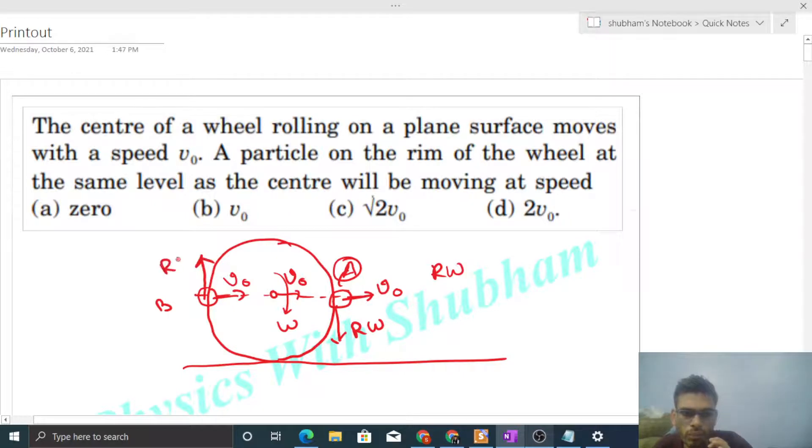So here it will be r into omega. Similarly, the particle at the back, particle B, will have r into omega upward direction due to rotation. You can feel this. For pure rolling, r omega will be equal to v0. This is the condition for pure rolling.